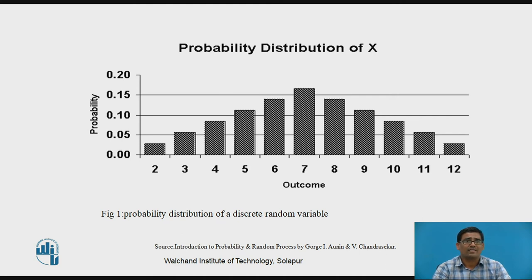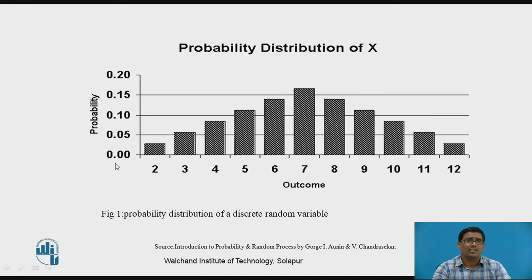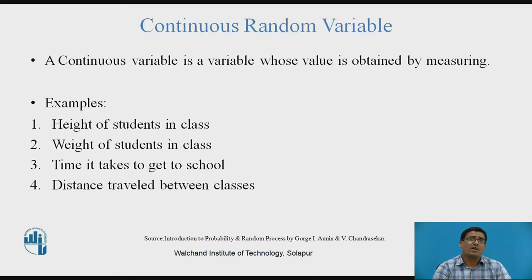We can also draw a diagram from this — the probability distribution of X. This diagram shows probability on the y-axis and outcome on the x-axis. The y-axis runs from 0 to 0.20 with intervals at 0.05, 0.10, 0.15. This graph represents the probability distribution of a discrete random variable, where probability is always less than one and starts from zero.